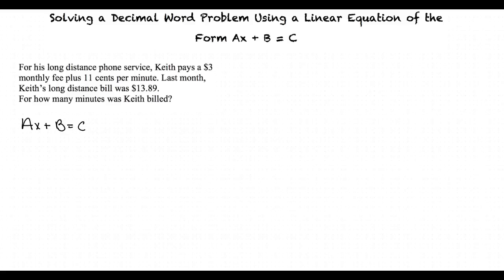Now, let's set up our linear equation using the form Ax plus B equals C. We are told that Keith pays a set monthly fee of $3 in addition to 0.11 dollars for every minute used, which all sums up to a total of $13.89 for the month.